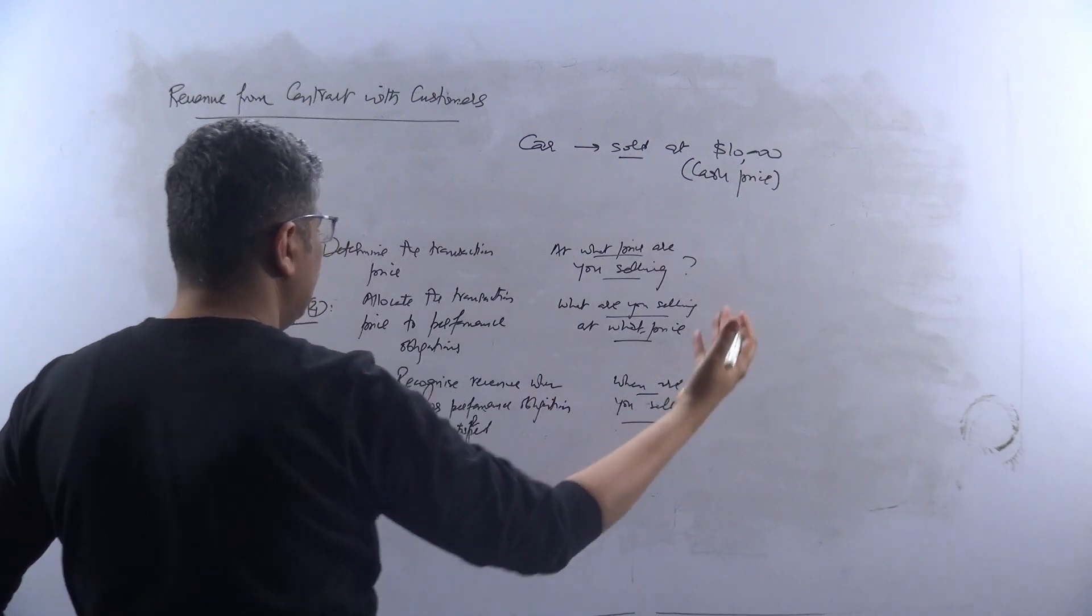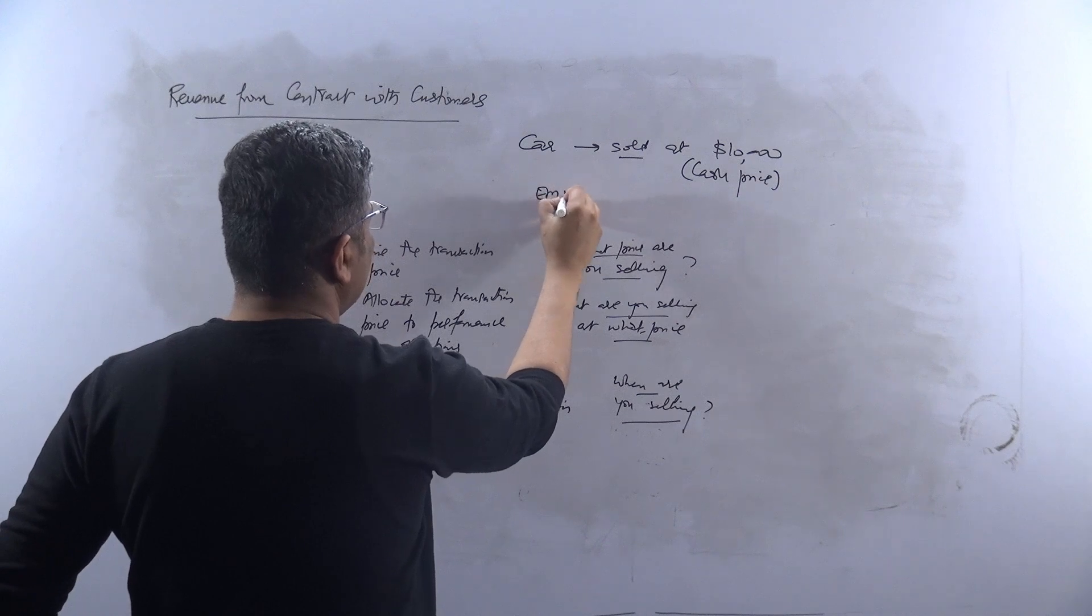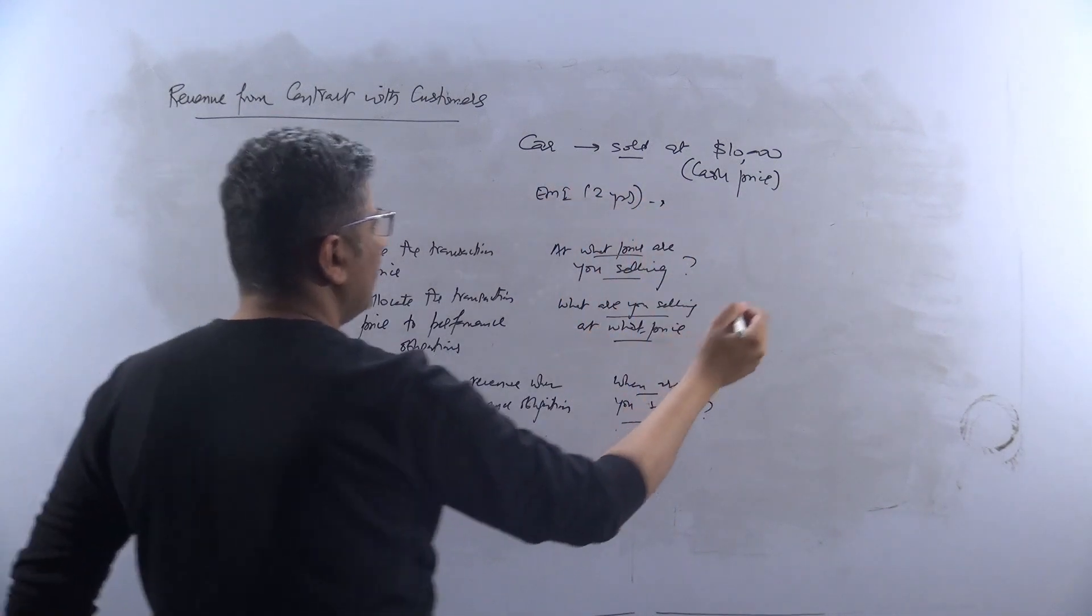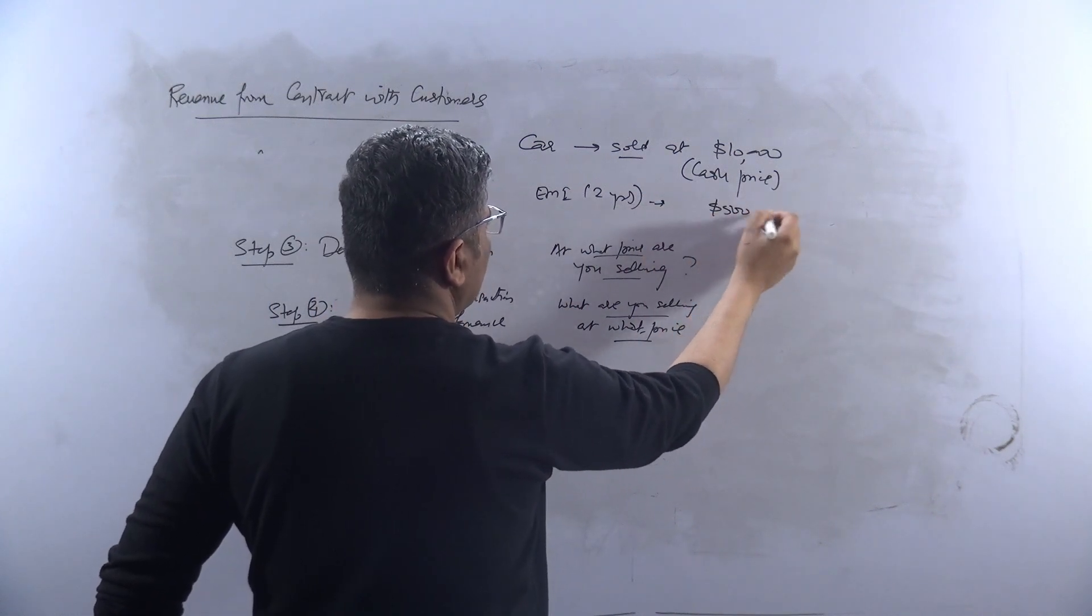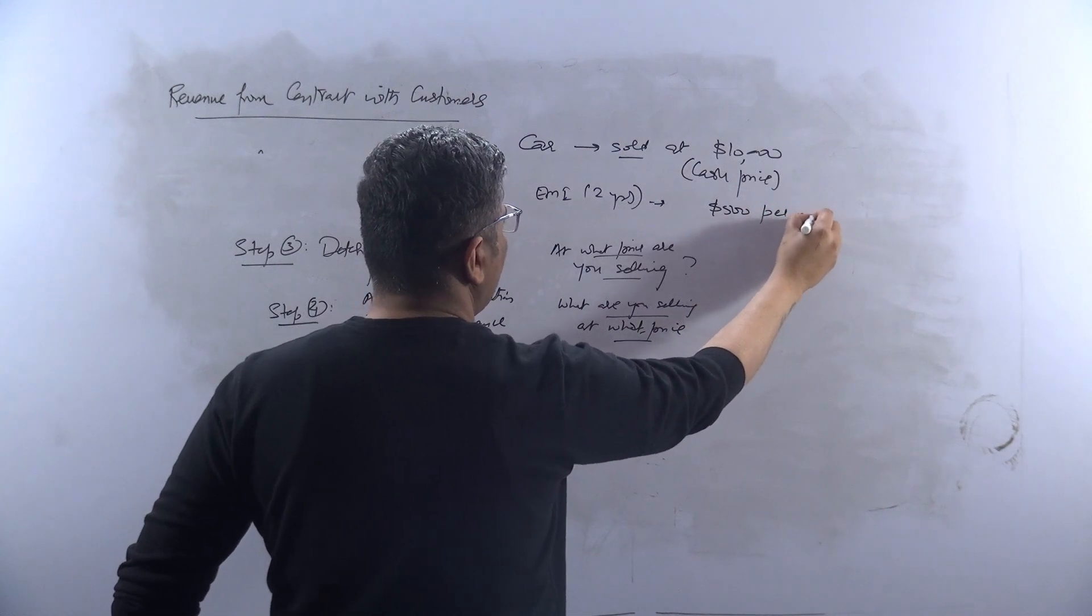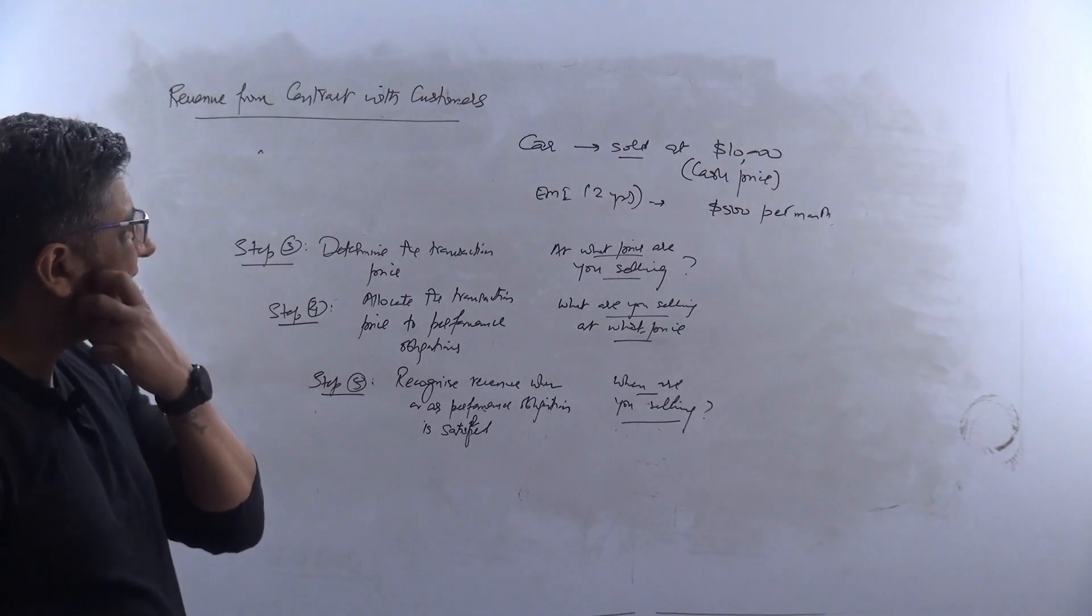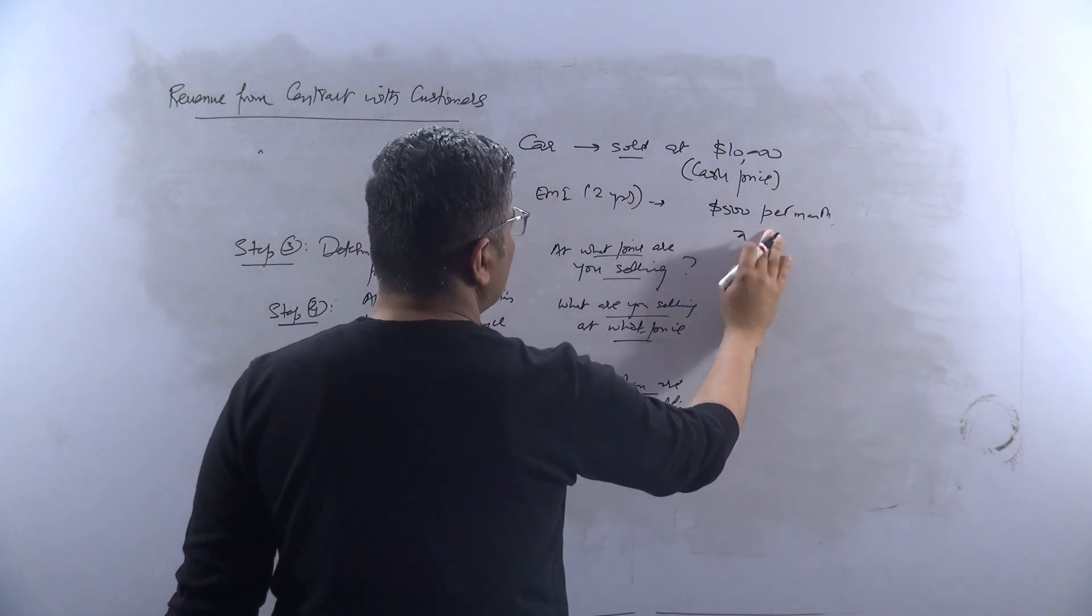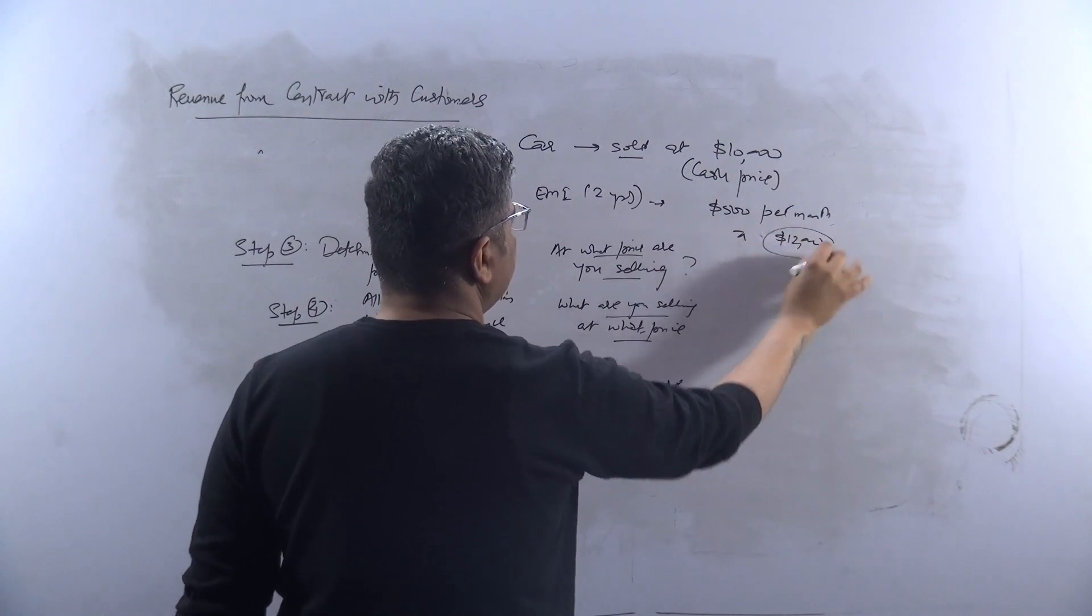You're saying that you can actually take it on an EMI option for two years, where you would pay, for example, $500 per month. Now that would make it, of course, $500 into 24, which would be $12,000.